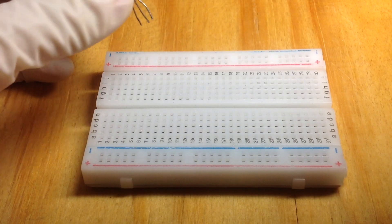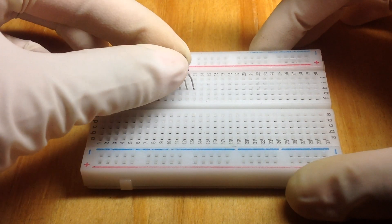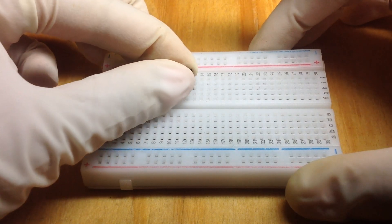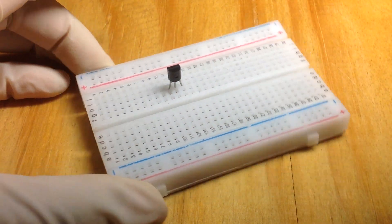Hi guys, put the transistor into row H of the breadboard and make sure that the flat side is facing towards row J.